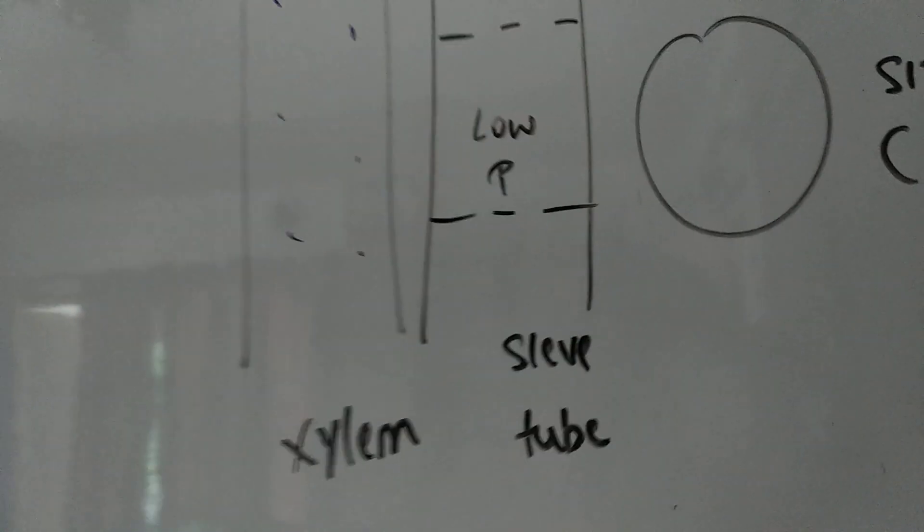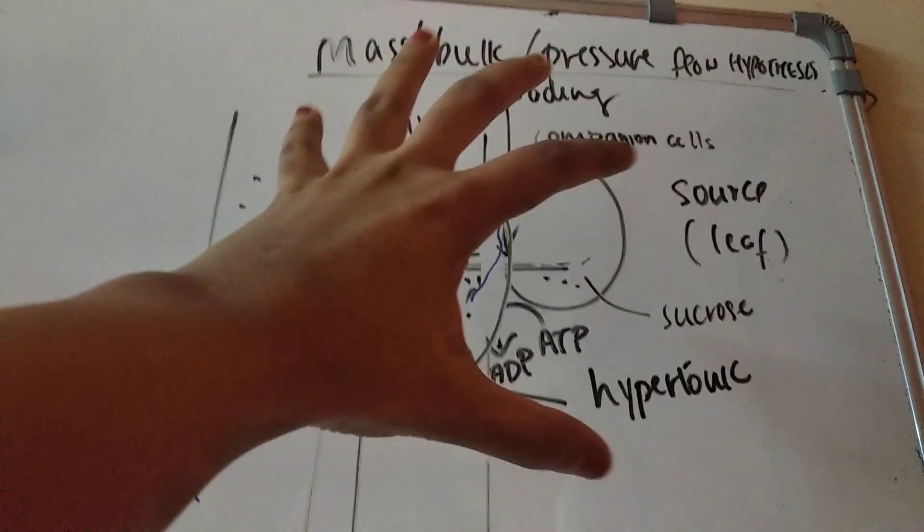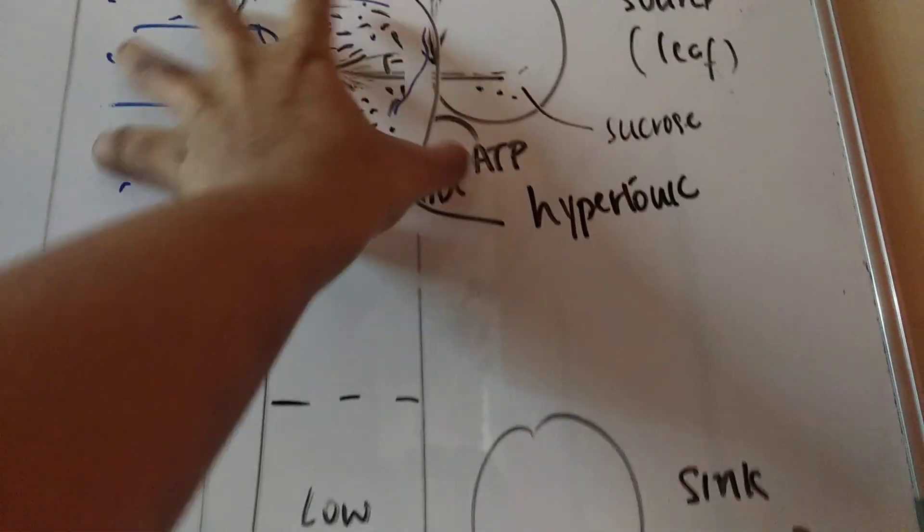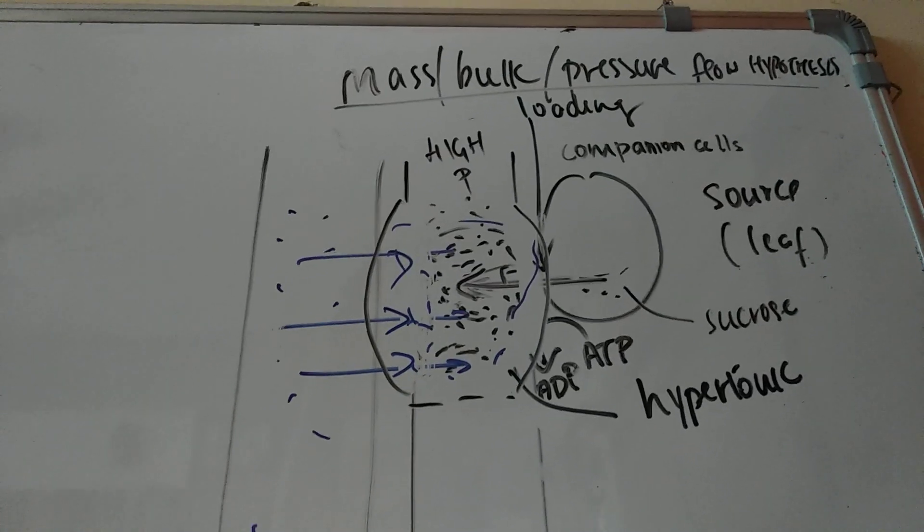So it means that this part is craving food. That's why the phloem has to transport food from here to here. If it was somewhere else, like a flower bud or somewhere above, then that place would be the low pressure region and the phloem would take its food in that direction.